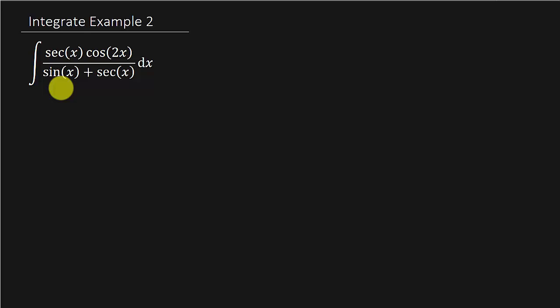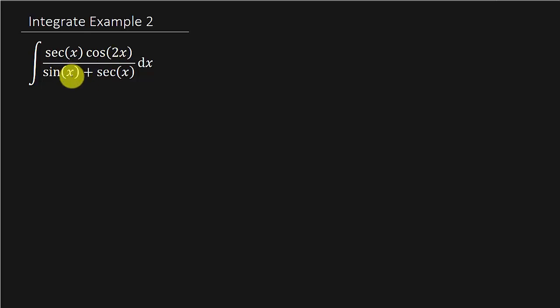If I see this sine x here and I see this cosine, the problem I have is this sine x — that's just x — but up here with cosine I've got 2x. So I've got a 2x. How am I going to deal with that? What am I going to do?